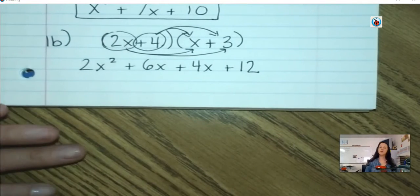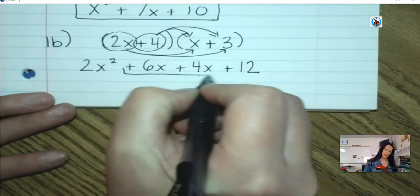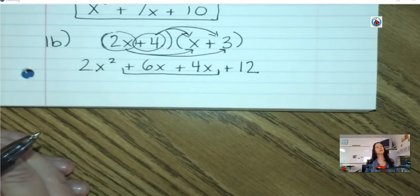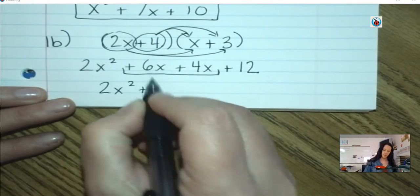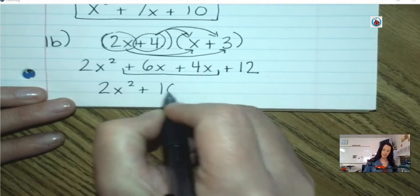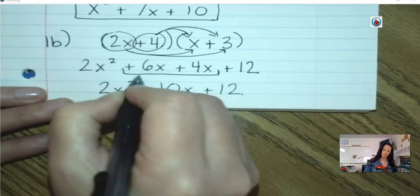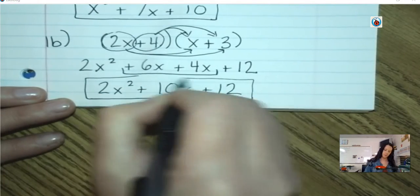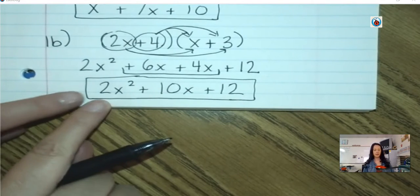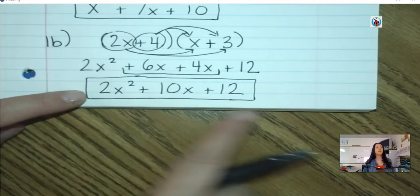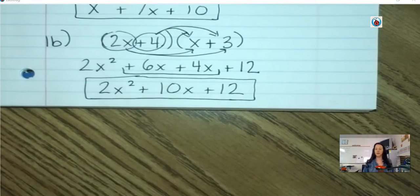Then look to see if you can combine like terms. 6x and 4x can be combined. So I have 2x squared, 6x plus 4x is 10x, and then I still have a plus 12. It's written in standard form — by degree. The leading coefficient is a 2. The whole thing has a degree of 2, because that's the biggest degree out of all of them.